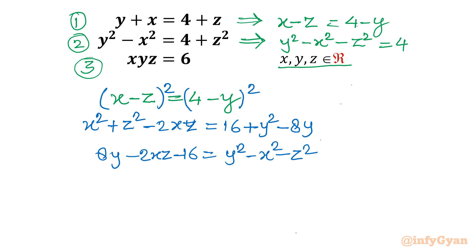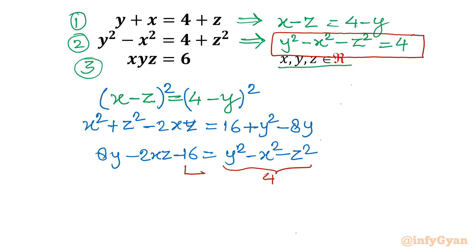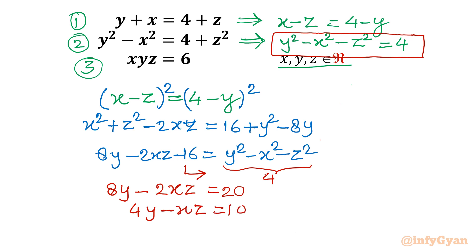Now we can use equation 2, which tells us that y squared minus x squared minus z squared equals 4. So substituting, we get 8y minus 2xz minus 16 equals 4. Taking minus 16 to the right: 8y minus 2xz equals 20. Dividing by 2: 4y minus xz equals 10, or xz equals 4y minus 10.